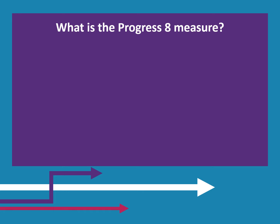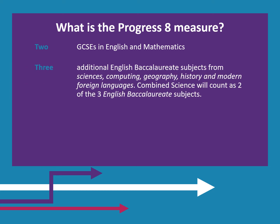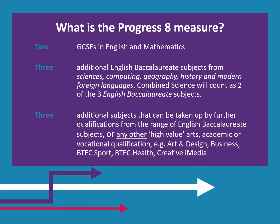The Progress 8 measure is of great significance to all secondary schools today. It is based on the progress students make in a suite of 8 subjects: two GCSEs in English and Mathematics; three additional English Baccalaureate subjects from Sciences, Computing, Geography, History and Modern Foreign Languages — with Combined Science counting as two of the three; and three additional subjects from further English Baccalaureate qualifications or any other high-value arts, academic or vocational qualification, such as Art and Design, Business, BTEC Sport, BTEC Health and Social Care, and Creative iMedia.